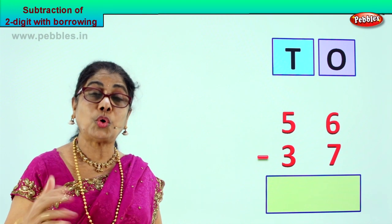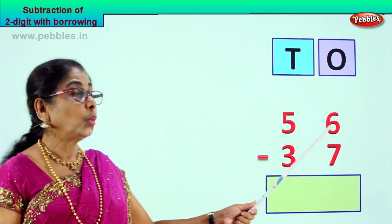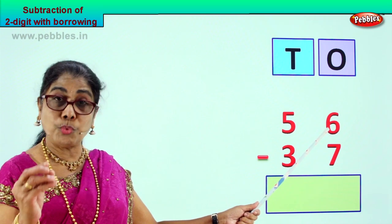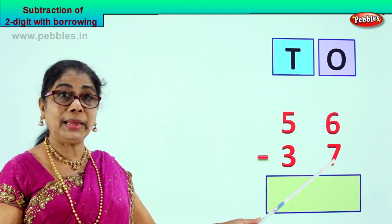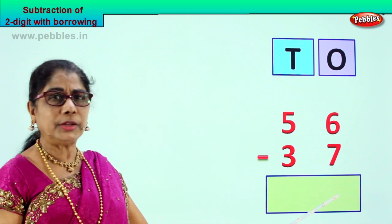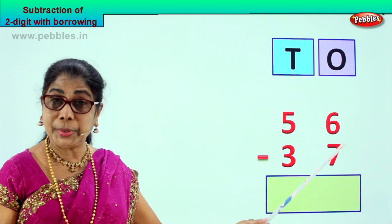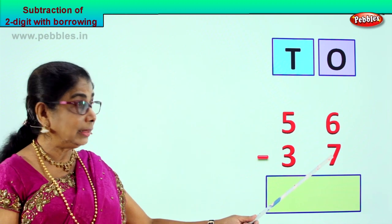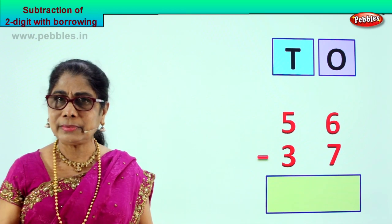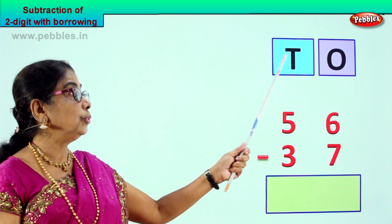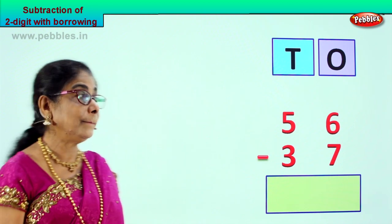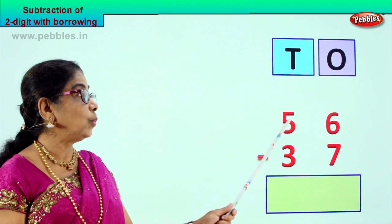Remember, we are going to borrow. What is the meaning of borrow? Now we have here 6 ones and 7 ones. 6 is small, 7 is a big number. You cannot in subtraction say 6 minus 7 — no. The top number should be a big number. Only then you can take away. Since 6 is small, 6 minus 7 cannot happen. So from the tens place, we are going to borrow 1 ten and bring it to the ones place.